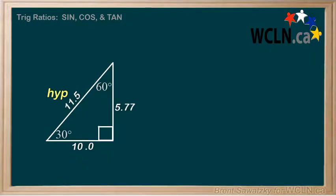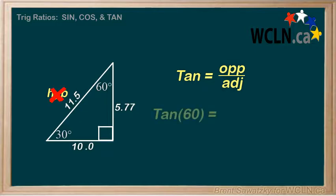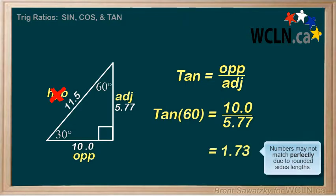The last trig ratio to consider is the tan ratio. The tan ratio is opposite side over adjacent side. Note that tan is the only trig ratio that doesn't involve our hypotenuse. What if we were asked for the tan of 60? In this case, the 60 is our reference angle. Opposite from the 60 is this side, 10, and adjacent to the 60 is this side, 5.77. So tan 60 equals 10 over 5.77 equals 1.7, with a slight bit of rounding.